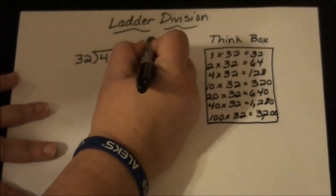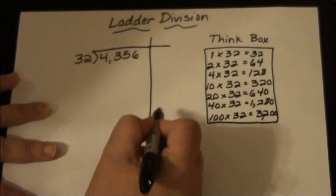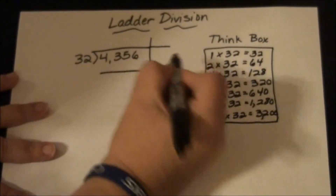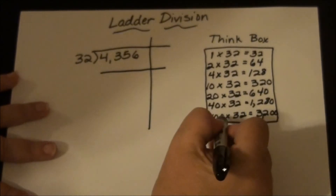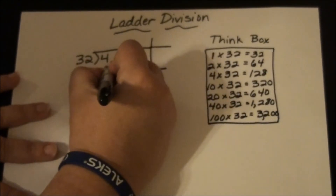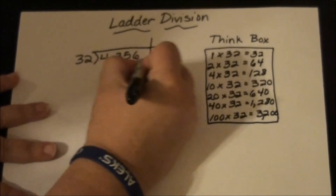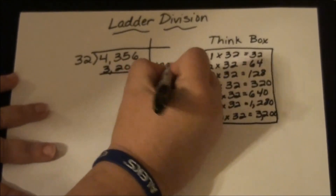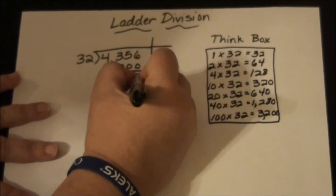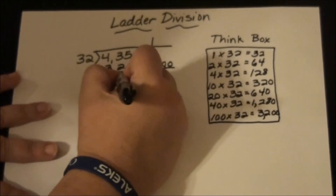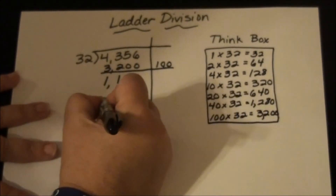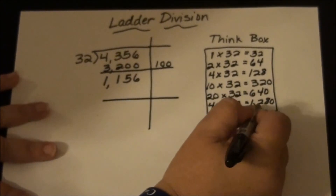Now I draw my ladder — here's the bar to hold on to and here's the first rung. I'm going to use 100, which equals 3200, so I write 3200 on the ladder and write 100 on the side so I know what factor went with that number. Now I subtract: 4356 minus 3200 equals 1156.